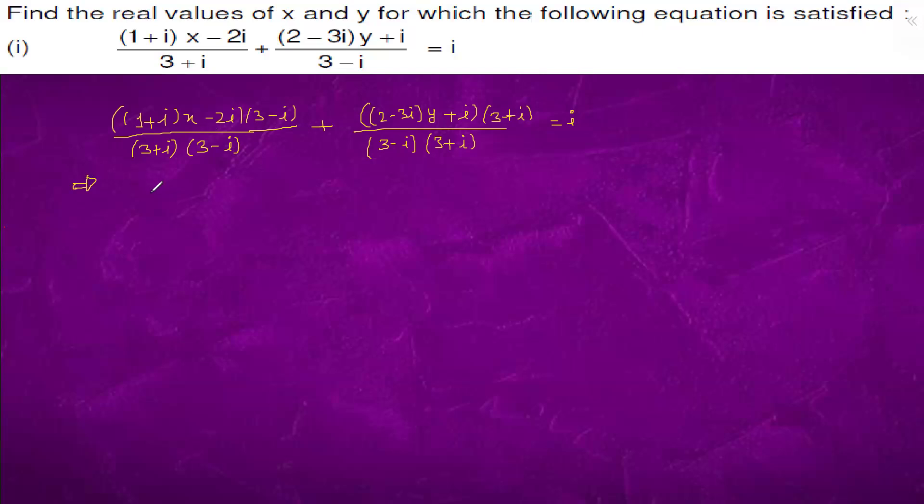This will go further as the denominator is 3 squared minus iota squared, which is 10, and it also is 10.